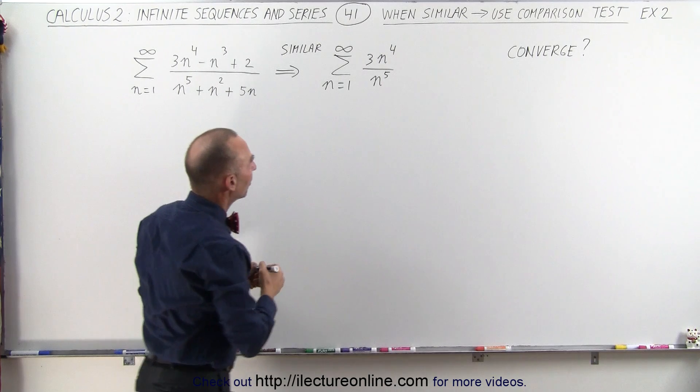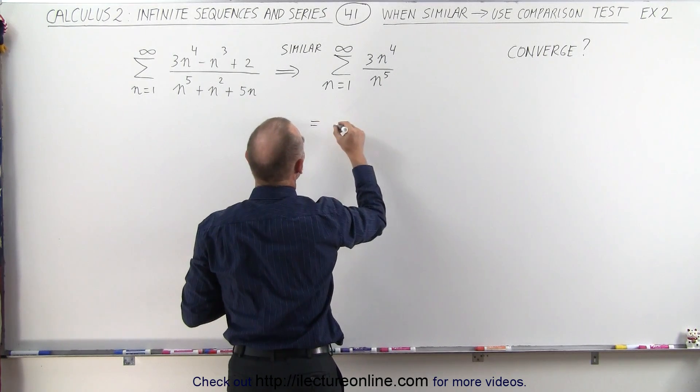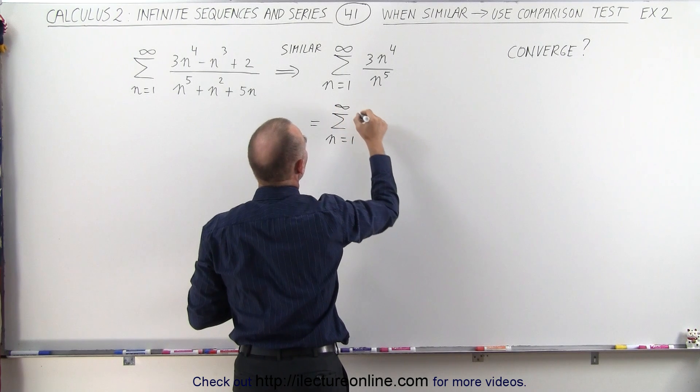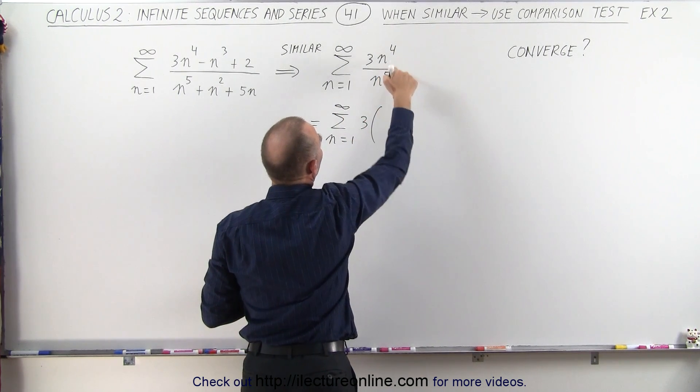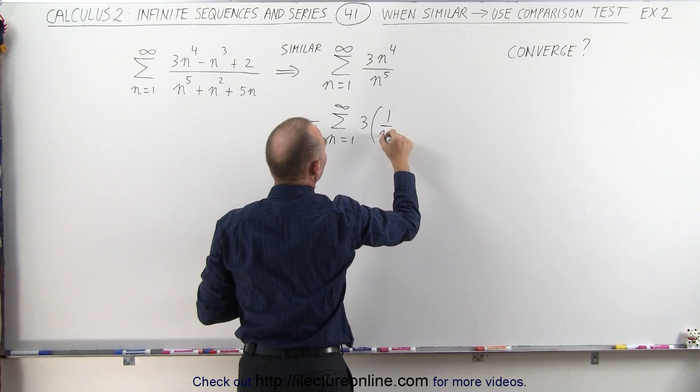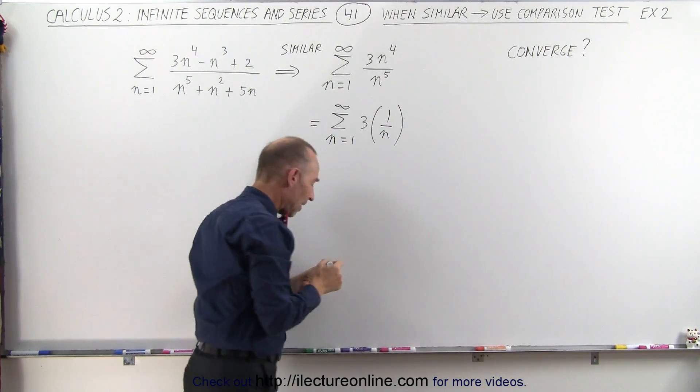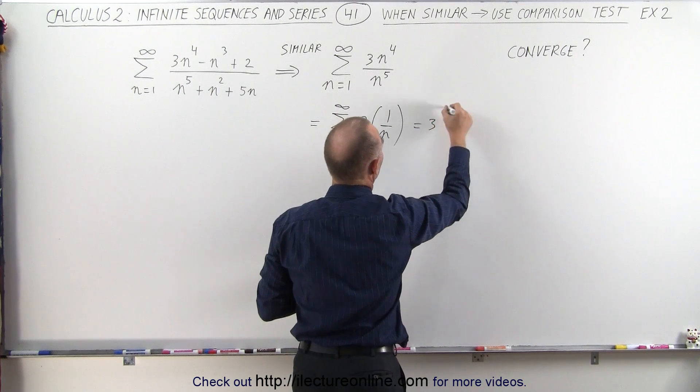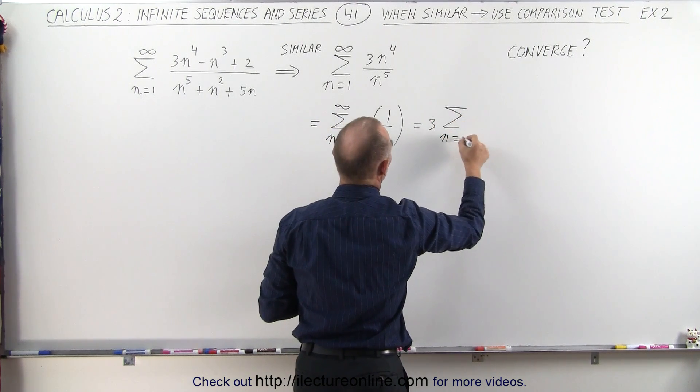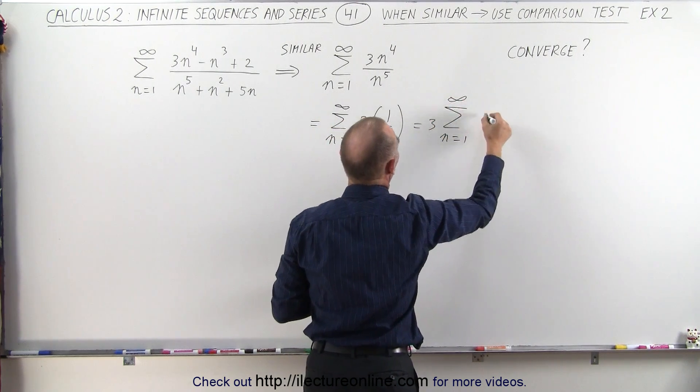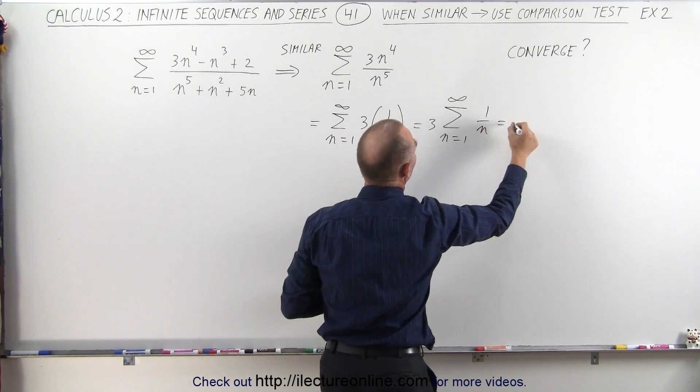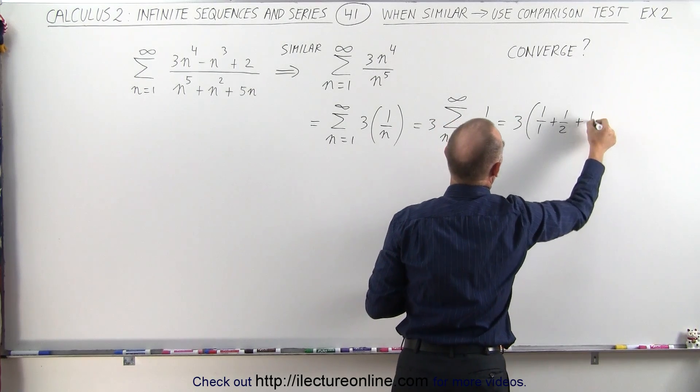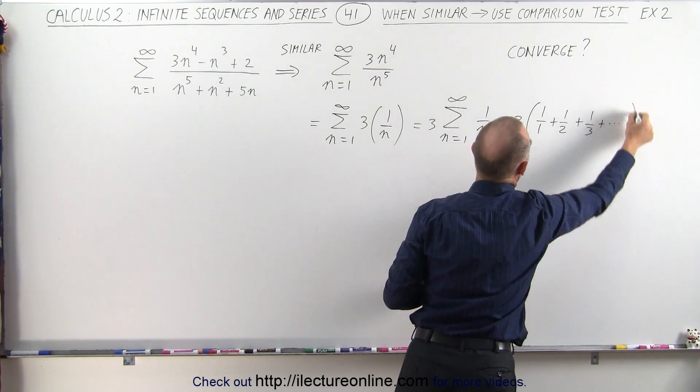So when we look at this, we can say this is equal to the infinite sum from n equals 1 to infinity of 3 times n to the 4th divided by n to the 5th, which is 1 over n. And now we have an infinite series of 3 times 1 over 1 plus 1 over 1 plus 1 over 2 plus 1 over 3 and so forth.